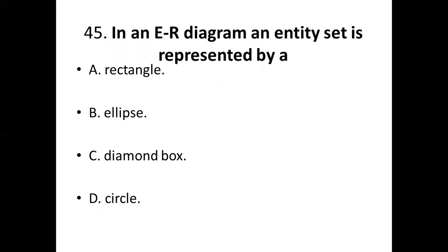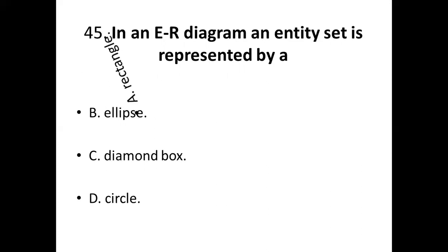45th bit: In an ER diagram, an entity set is represented by a dash. Option A: rectangle. Option B: ellipse. Option C: diamond box. Option D: circle. Answer — Option A: rectangle.